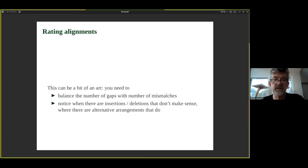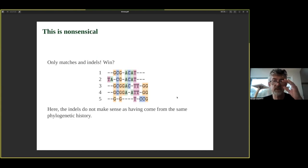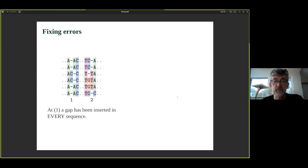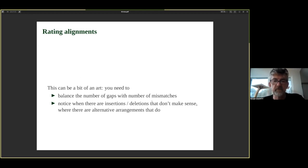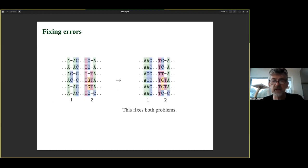It becomes a balancing act: you have to balance the number of gaps against the number of mismatches. A dreadful alignment is one you can't use for phylogenetics. You should really check when there are insertions or deletions that simply don't make sense — that don't correspond to a shared history of the surrounding homologous sites — particularly when there are alternative arrangements that do fit the phylogenetic history relating those sequences.